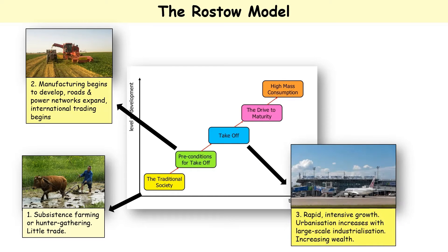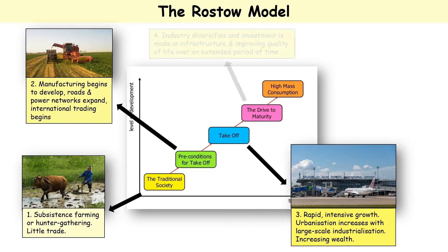We then move to takeoff. This is rapid intensive growth where cities and towns are growing and there is large-scale industrialization - that's factories, manufacturing and making things for the society that's getting increasingly wealthy.